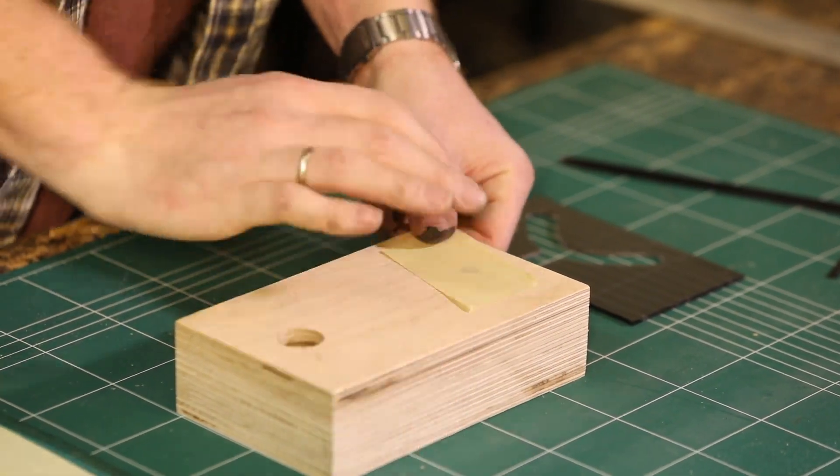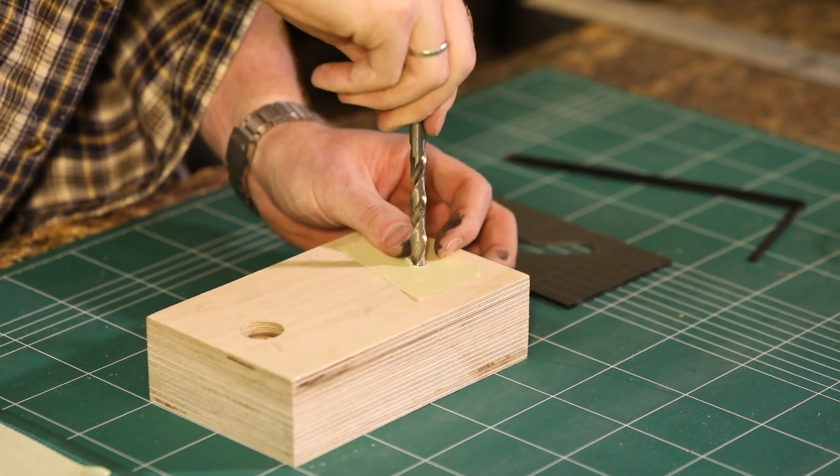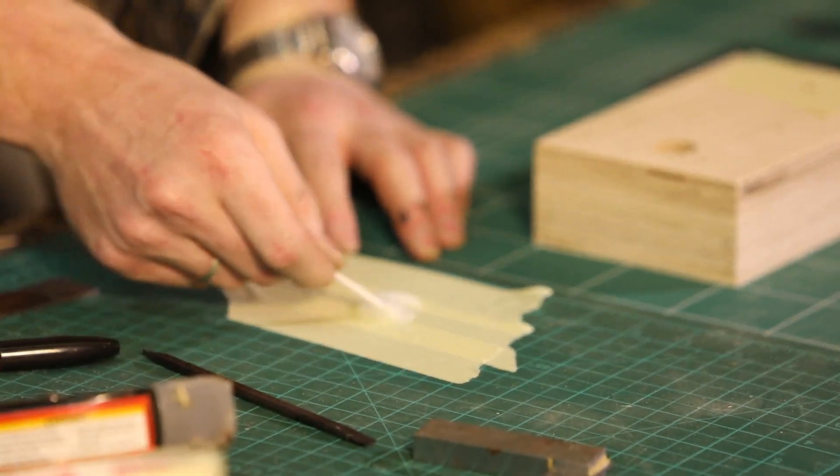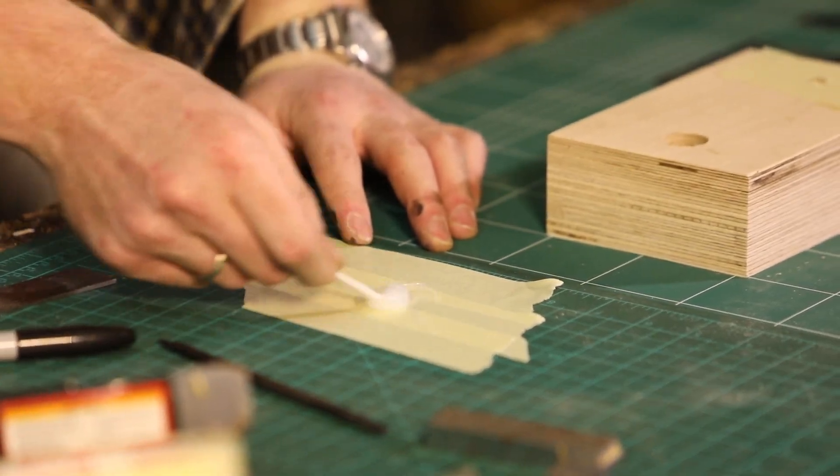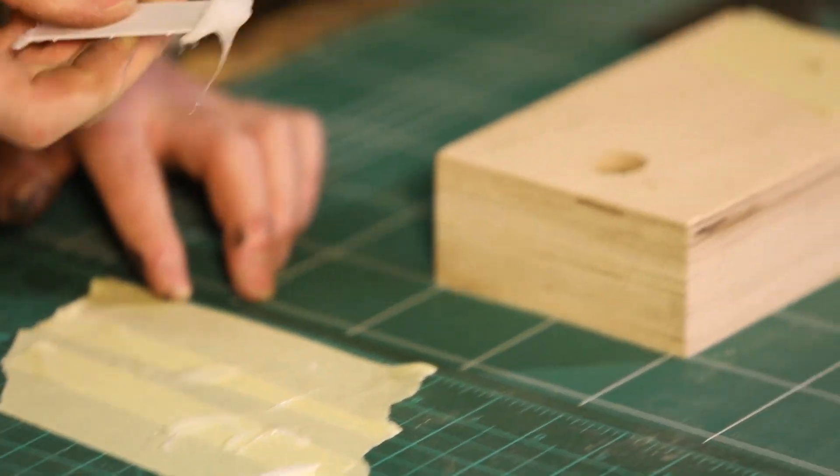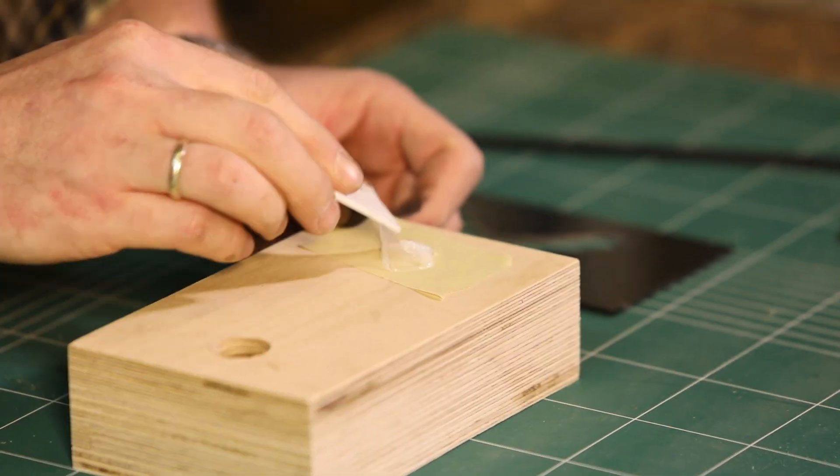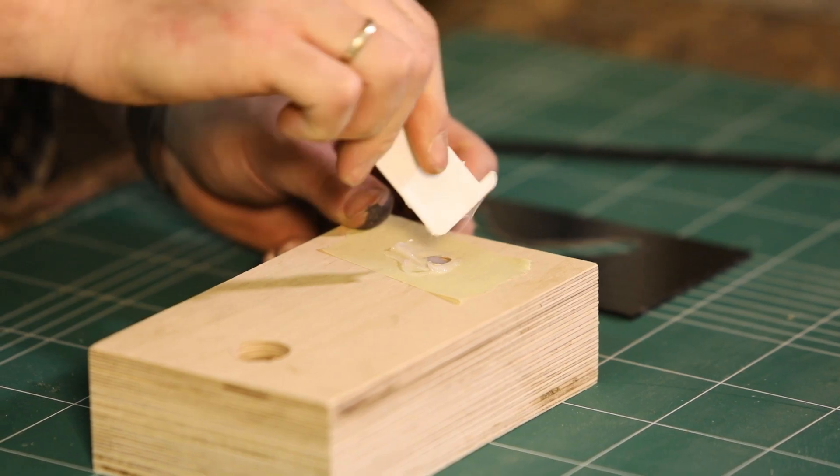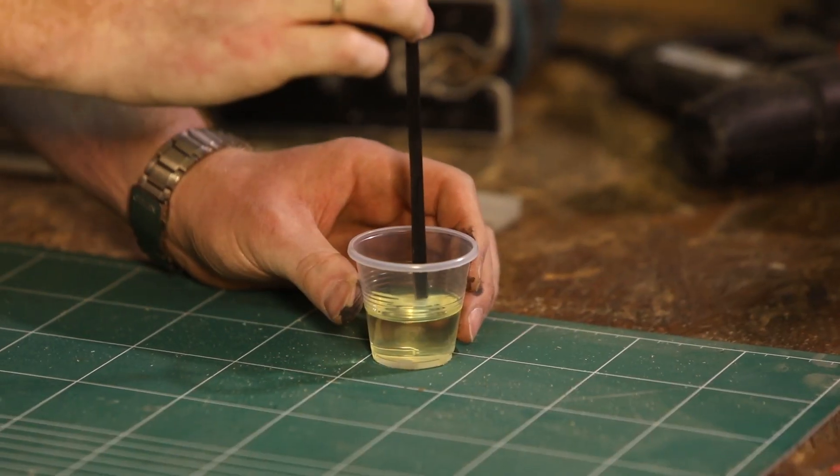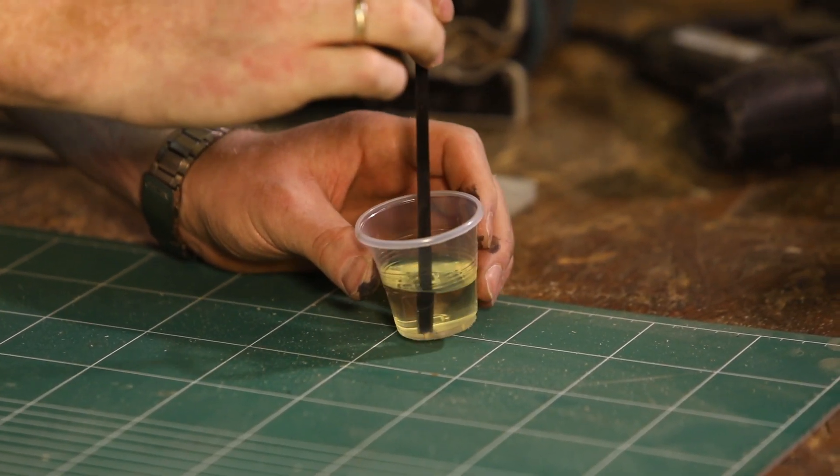The final step before we can put it all together is making a tight fit between the 9mm hole in the base and the curve holder. In order to do so, I came up with this solution. I filled the hole with epoxy and inserted the curve holder. Not before I dipped it in some plain vegetable oil. It will act as a release agent.